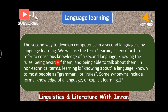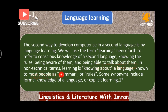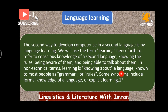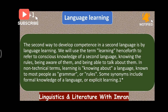When you have the subconscious knowledge of a second language, that would be acquisition. When you have the conscious knowledge of a second language, that would be learning. Knowing the rules, being aware of them, and being able to talk about them — in non-technical terms, learning is knowing about a language. Acquisition is not knowing about a language, but having competence. When we say knowing about a language, it means you know the rules of a language — known to most people as grammar or rules.